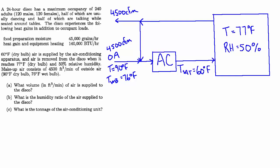101 Solved Mechanical Engineering Problems, HVAC problem 7. A 24-hour disco, and don't ask me how old this problem is, has a maximum occupancy of 240 adults - 120 males, 120 females - half of which are usually dancing and half of which are talking while seated around tables.